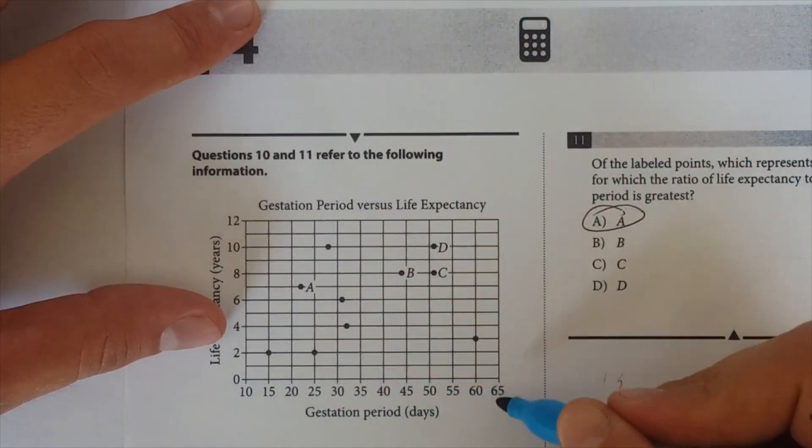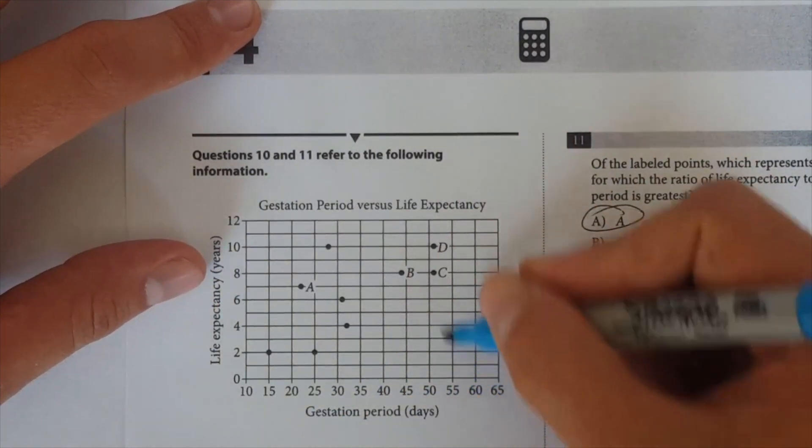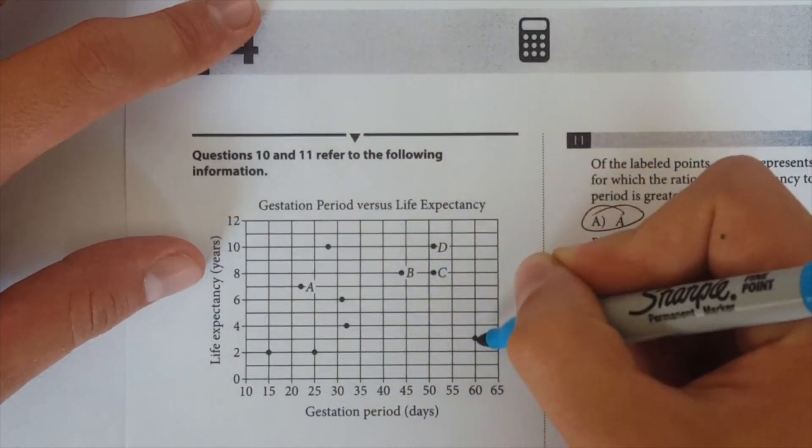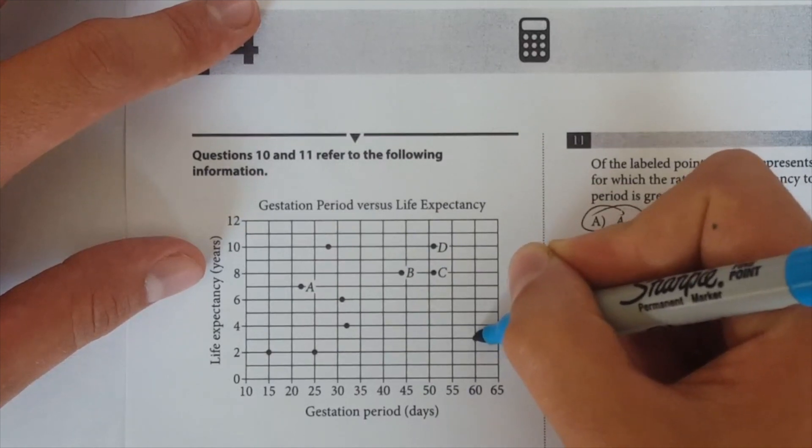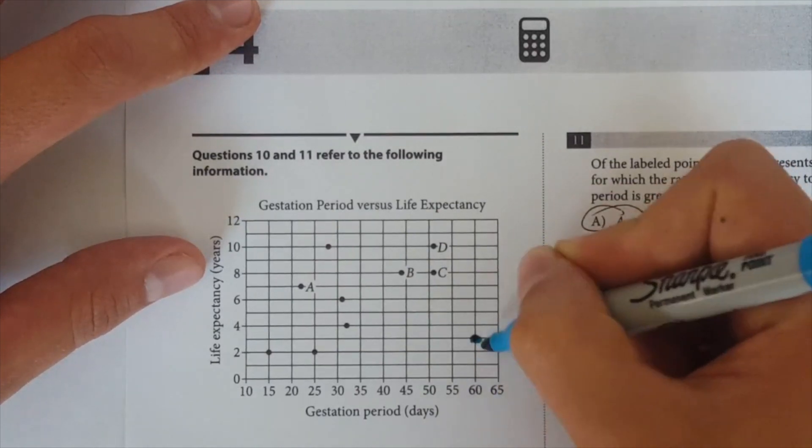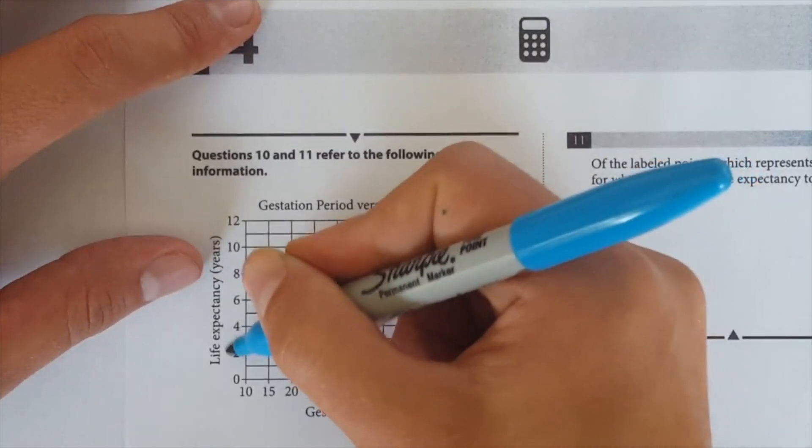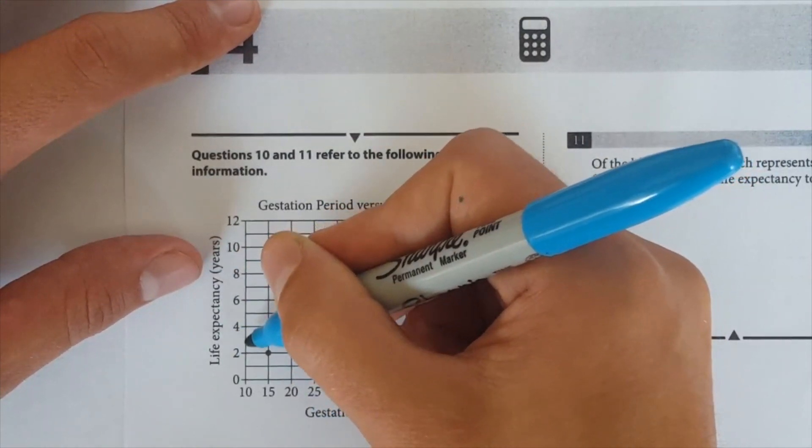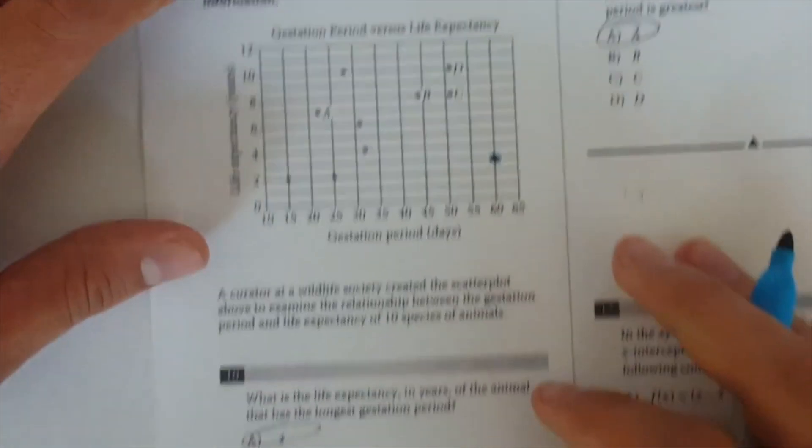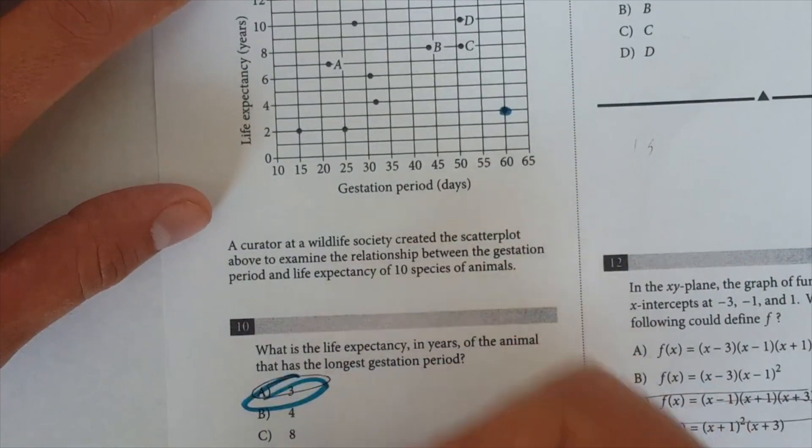So, what is life expectancy if the animal has the longest gestation period? All right. Well, the longest one is just going to be one that's farthest out here, which is, let's see, this one's pretty far out, this one's, but it's, you know, just look at it, this one's the farthest out. Okay. It's here. So it's a 60-day gestation period. And now if you read on the y-axis, the life expectancy is in between two and four, which is three. So it's three years. So it's A.